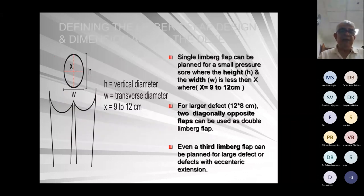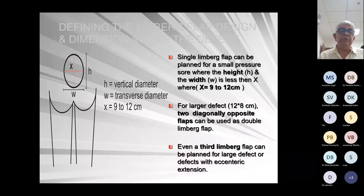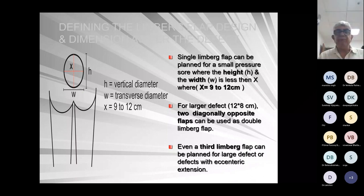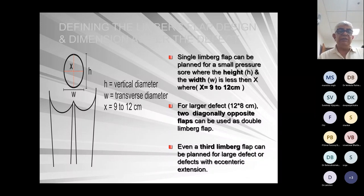In this graphic, x is the vertical diameter — the height — and w is the transverse diameter — the width — and x equals 9 to 12 cm. Why 9 to 12? Because a 9 to 12 centimeter defect can be closed primarily with a single flap, depending on the laxity of the skin. A single Limberg flap can be planned where x and w are both less than x. For larger defects, two opposite flaps can be used as a double Limberg. A third Limberg can be placed if both x and w are more than x.